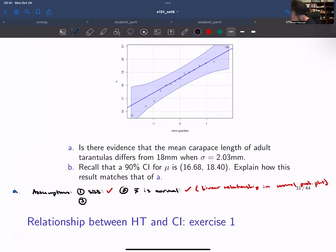And then on step three, we would have sigma known, and this is also true. We're told that sigma is 2.03.